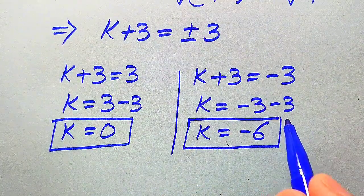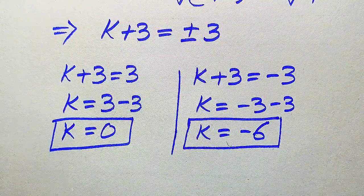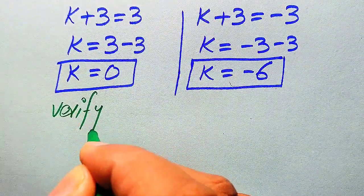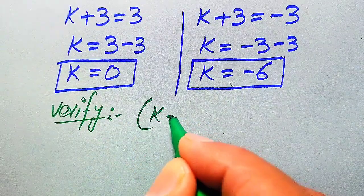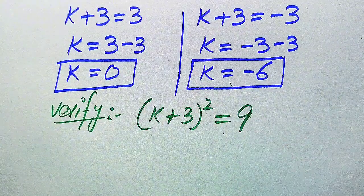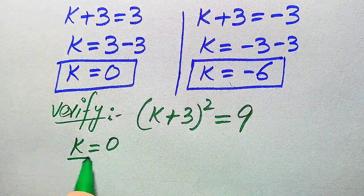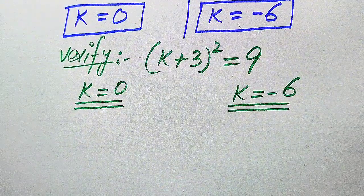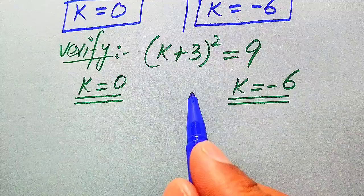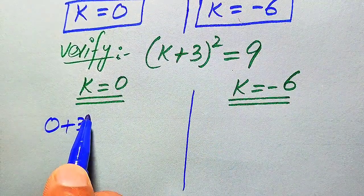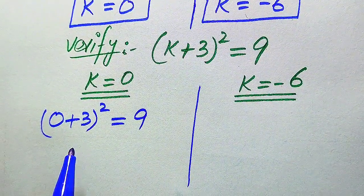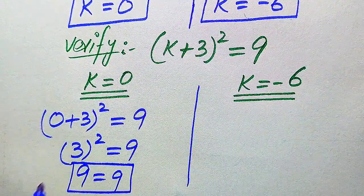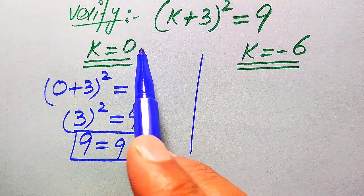So we have two values of k: k = 0 and k = -6. In the next step we verify that both values satisfy the given equation (k + 3)² = 9. For verification of k = 0, we substitute into the left-hand side: (0 + 3)² = 3² = 9, which equals 9. Both sides are equal, so k = 0 satisfies the equation.